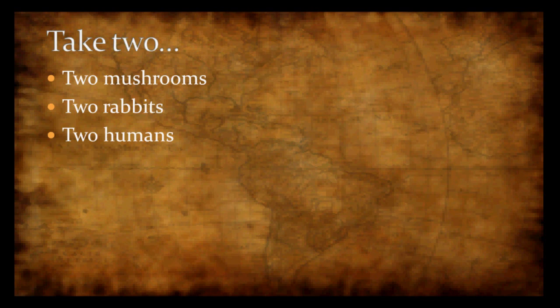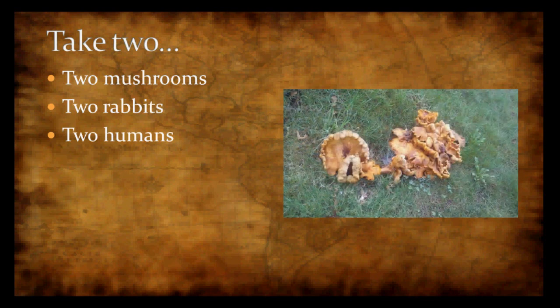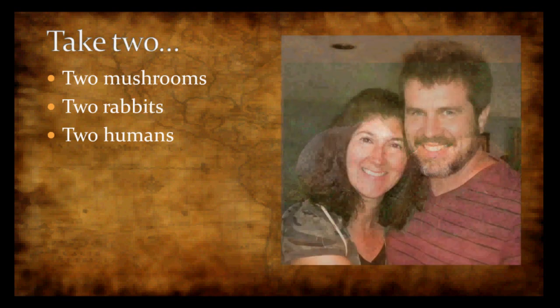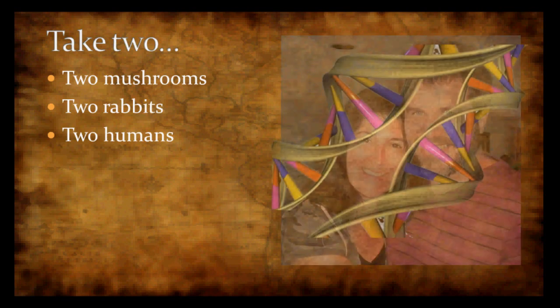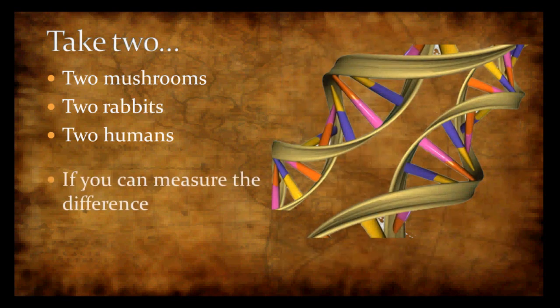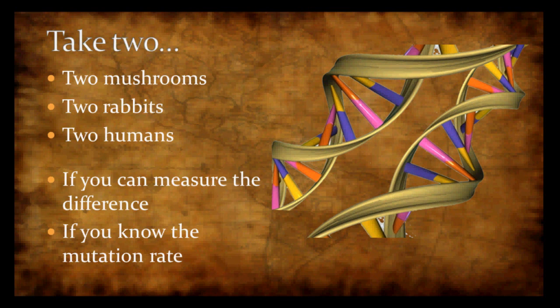If you take any two organisms — two mushrooms, two rabbits, two humans — and you know the difference between the DNA and you know the mutation rate for those differences, then you can calculate just how far back a common ancestor existed.